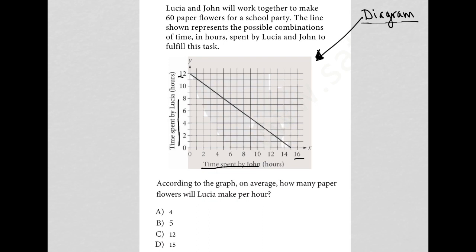None of that tells me exactly what I'm looking at here, but I can pay attention to the graph and say, as we move to the right across the graph, the time spent by Lucia goes down, right? As the time spent by John actually goes up. That's important to know potentially.